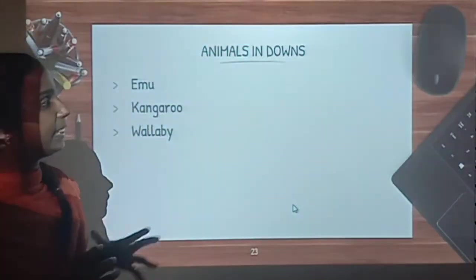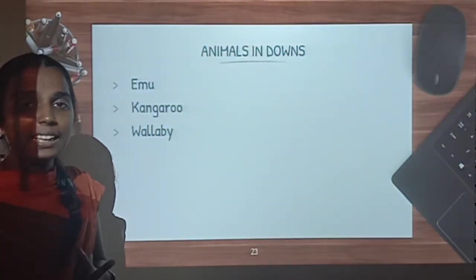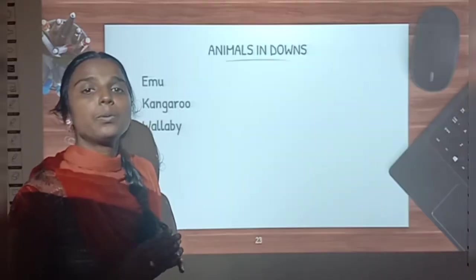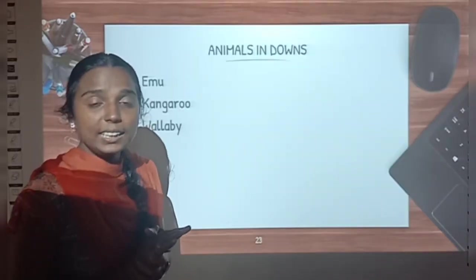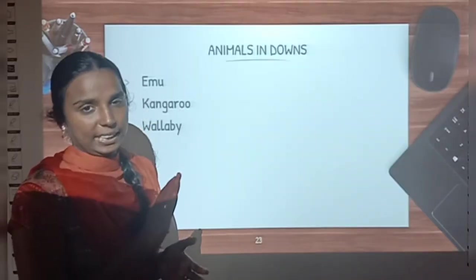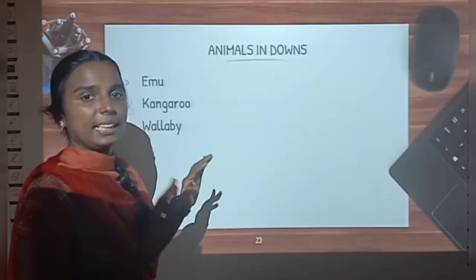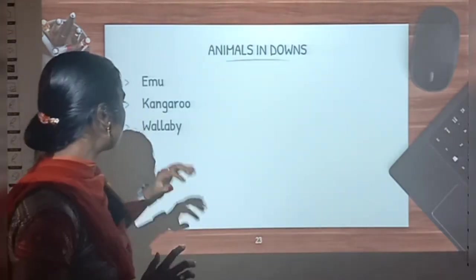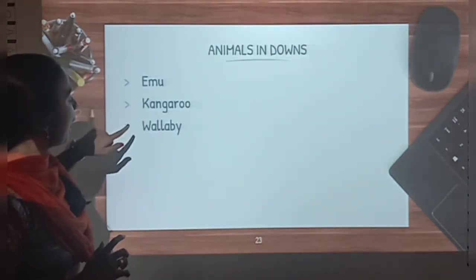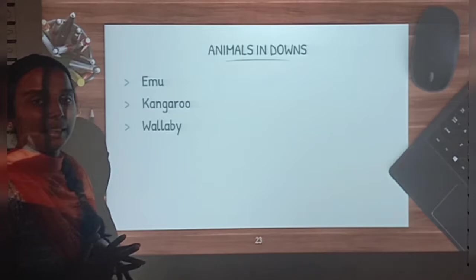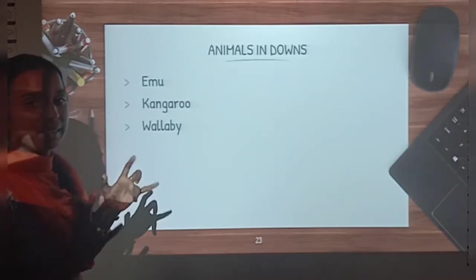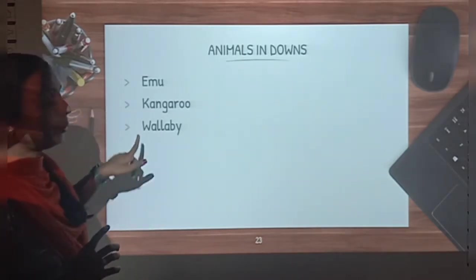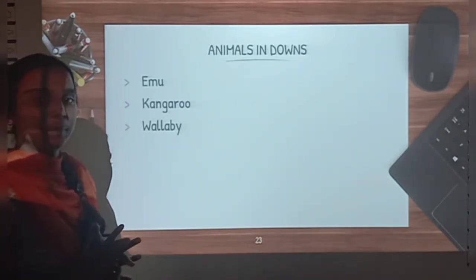Now let us see what animals we can find in the downs. Downs are the grasslands located in Australia. Let us see what animals we can find in the downs — emu, kangaroo and wallaby. So what are the animals we can see in Australia? Emu, kangaroo and wallaby.